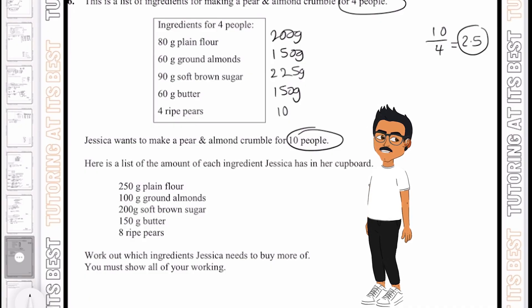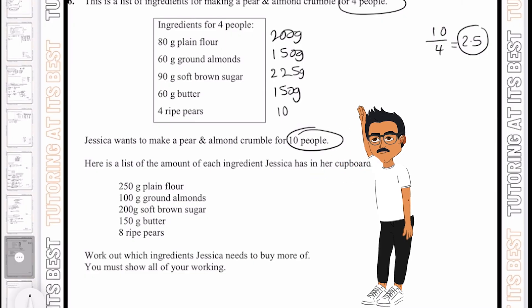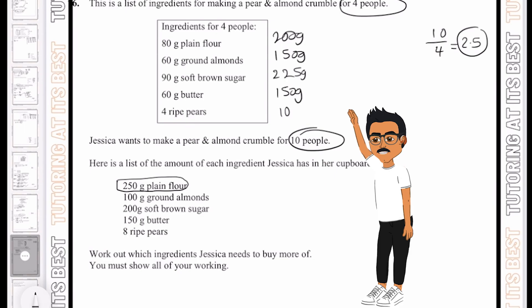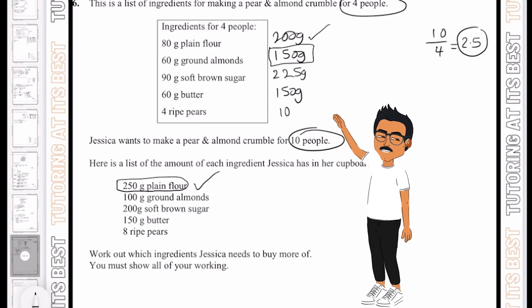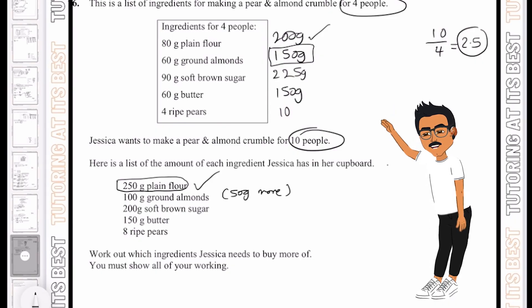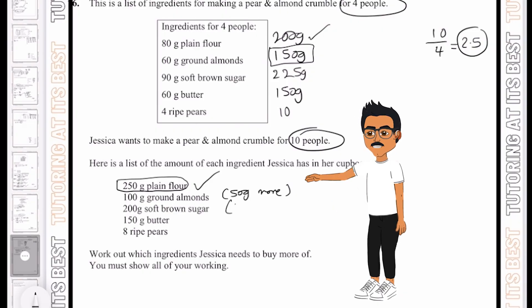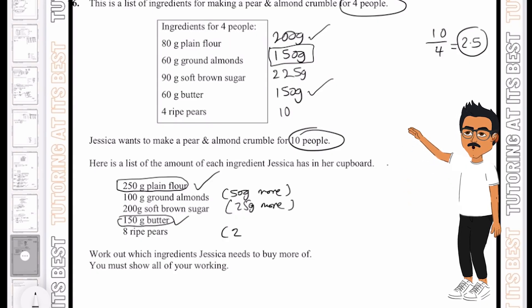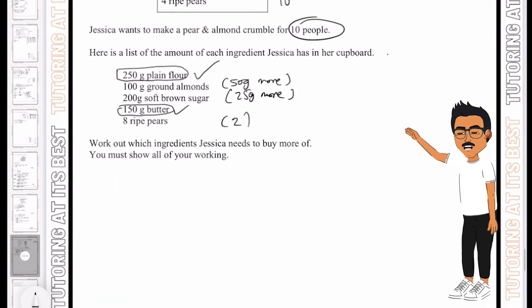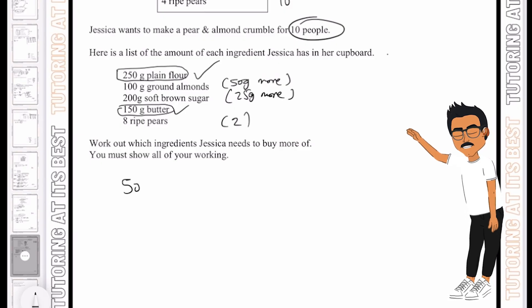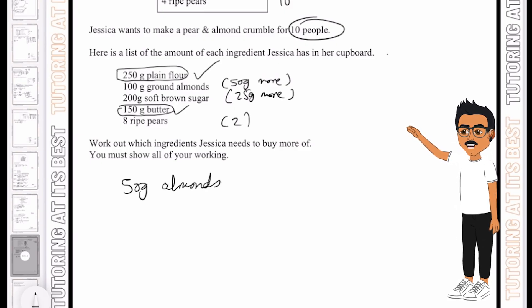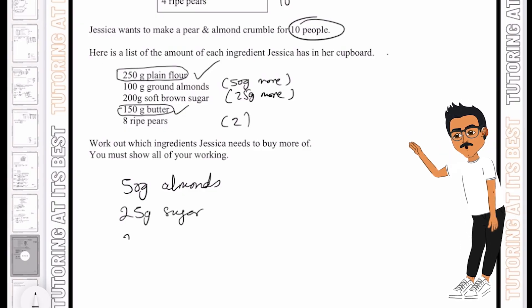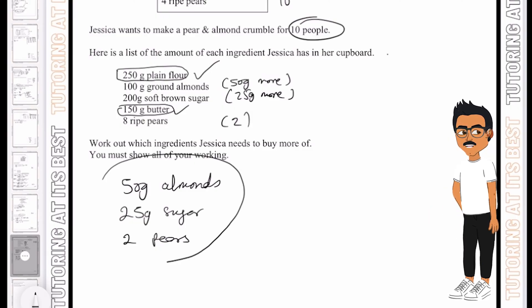So now let's compare this to what Jessica has already in her cupboard. So she's got 250 grams of plain flour, we only need 200, so that is fine. She's got 100 grams of almonds, but we need 150, which means we need 50 grams more. She then has 200 grams of brown sugar, but we need 225, so we need 25 grams more. She then has 150 grams of butter, which is perfect for us, because we also have the same. And then she has 8 pears, so we need 2 pears. So in total, the question is asking, work out which ingredients Jessica needs to buy more of. We know we need 50 grams of almonds, we need 25 grams of sugar, and we need 2 pears. And there we are. And that's all she would need.